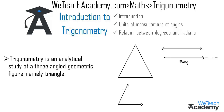The join of two rays has a common endpoint, also called the point of intersection of two rays, which is called the vertex. This intersection gives an angle, and the rays that form an angle are called the sides of the angle. When two rays intersect each other perpendicularly, they give an angle of 90 degrees.